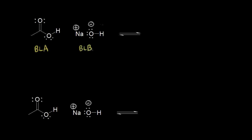When you're drawing the mechanism, you use curved arrows to show the flow of electrons. These two electrons on hydroxide are the two that are going to grab the acidic proton on acetic acid. So there's my curved arrow — only the proton moves, so these two electrons are left behind on this oxygen.